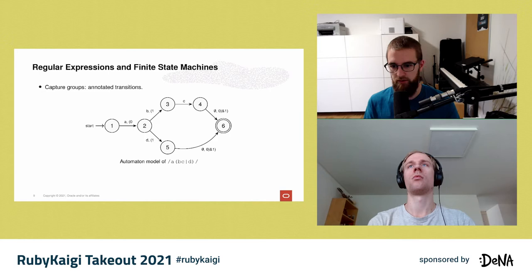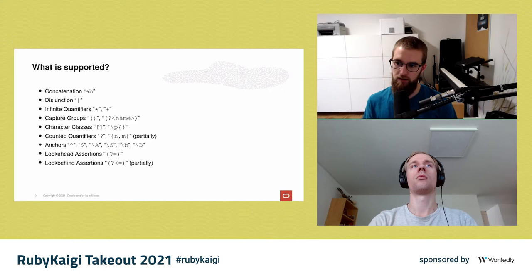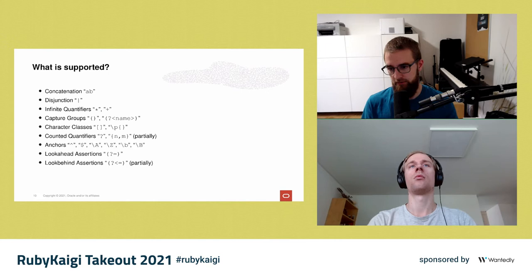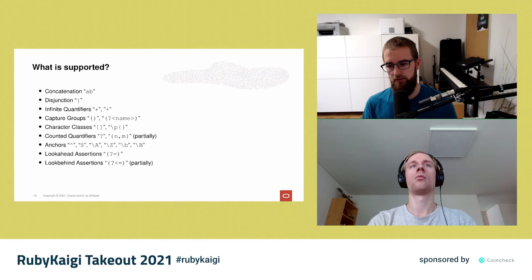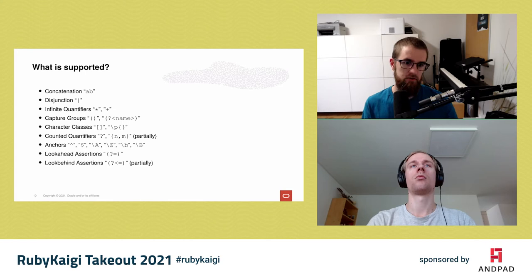Here is a list of supported features. We already covered concatenation, disjunction, infinite quantifiers, and capture groups. Character classes are trivial — they simply map to the accepted symbol set of a single transition. Counted quantifiers are partially supported: T-Regex unrolls the counted loop, so a quantifier from one to four iterations would have four additional states in the state machine, copying the quantified term for every possible iteration count. This only works for low iteration counts; support for arbitrary counts is planned but not yet implemented. Anchors are also supported.